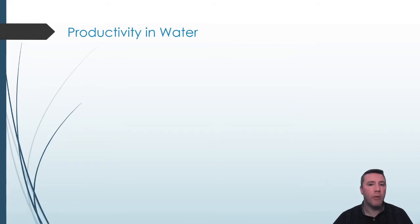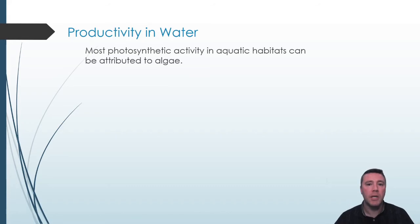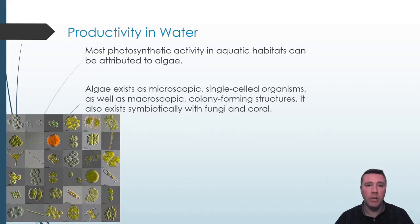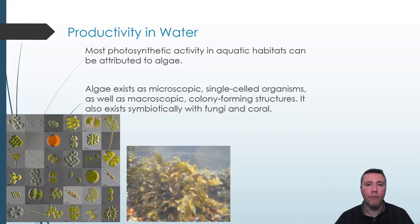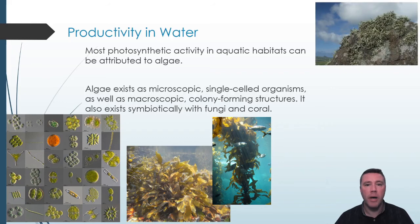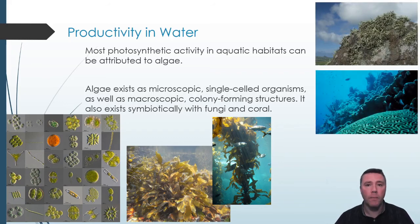On land, primary productivity is largely the responsibility of grasses, trees, and shrubs. In water, however, nearly all primary productivity is thanks to algae. Algae can be found in nature existing as single-celled organisms, as well as colony-forming structures like seaweed and kelp. Algae also forms symbiotic relationships with fungi called lichen and coral.